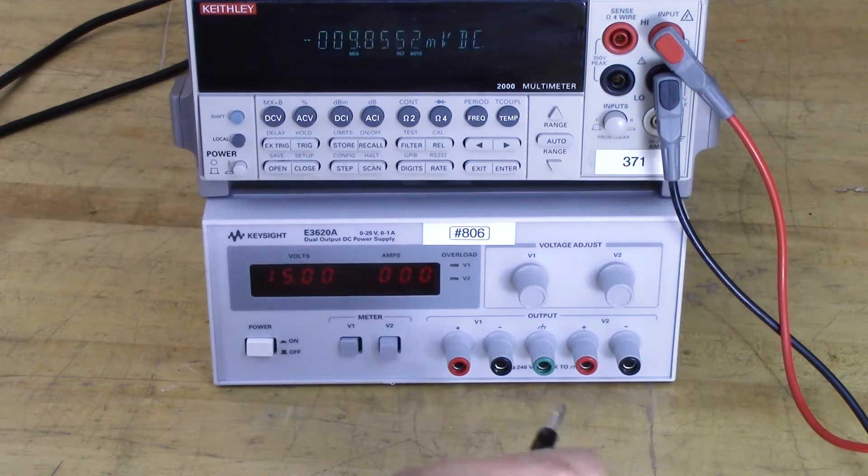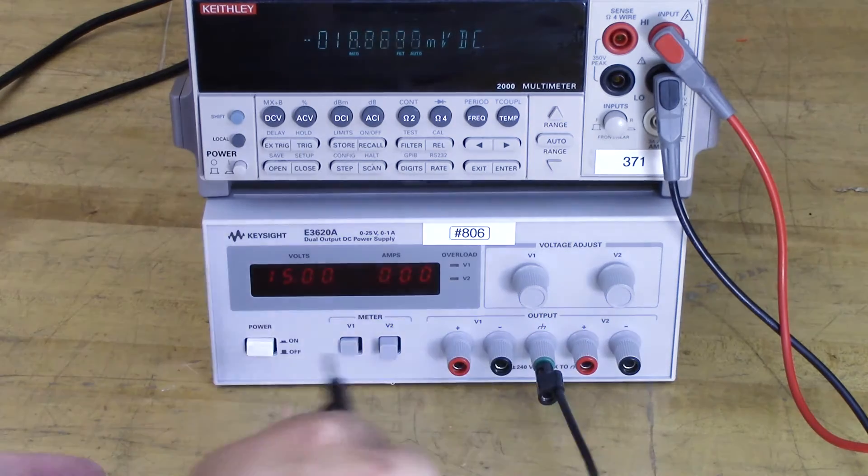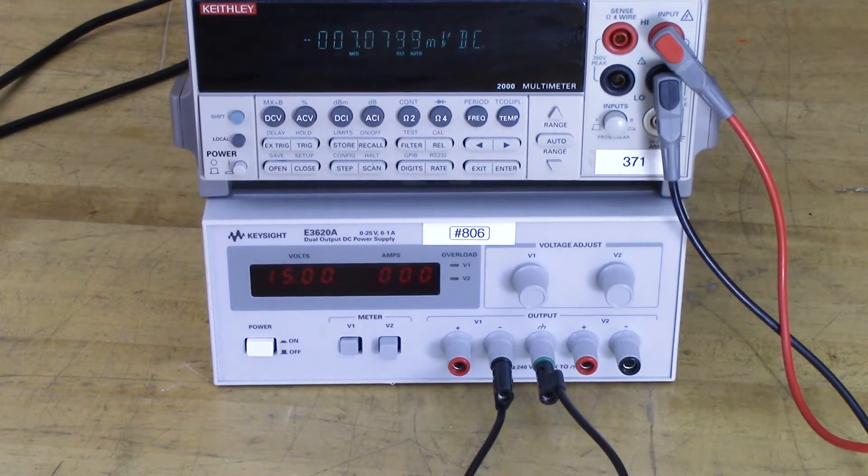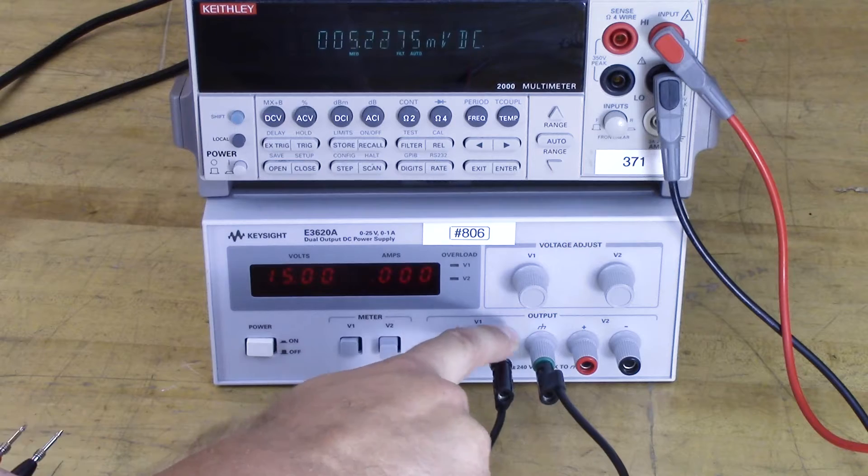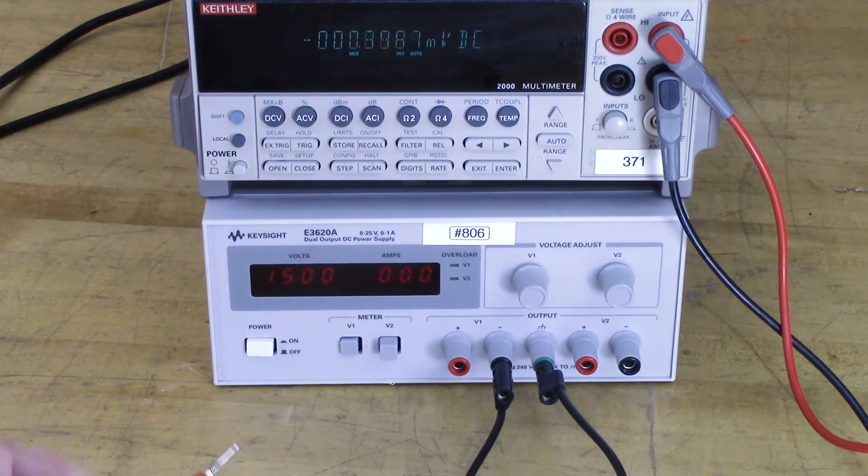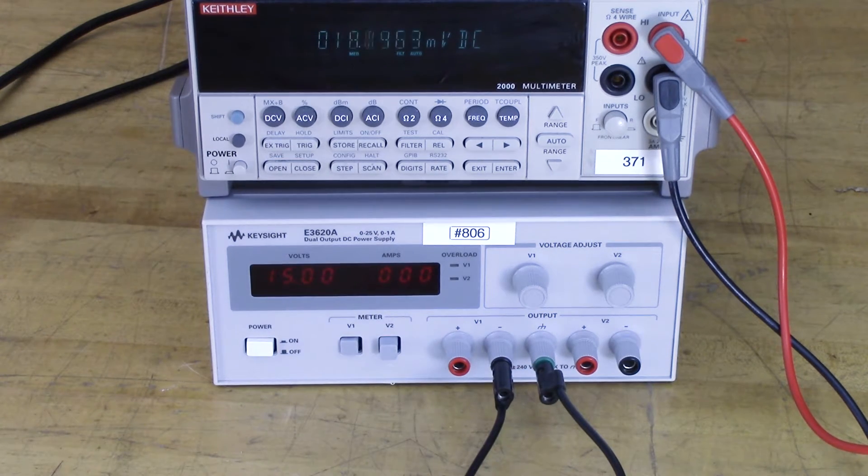Now if I want to use the earth reference as my reference in my circuit, I can just connect that to that. So that means this terminal is now connected to the same ground reference in my outlet.